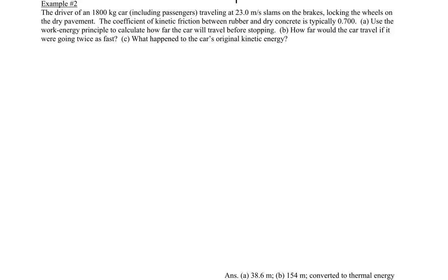Example number two. We have a driver of an 1800 kilogram car traveling at 23 meters per second who slams on the brakes, locks the wheels on dry pavement. The acceleration is backwards, we have a negative acceleration or deceleration, and we have a coefficient of friction of 0.7. We're asked to find how far the car will travel.